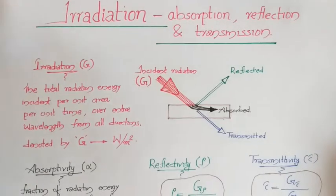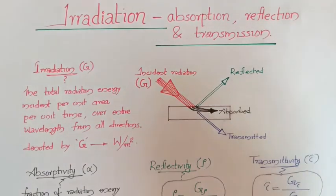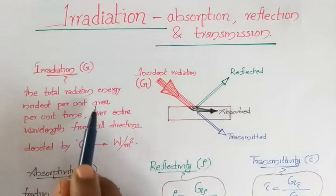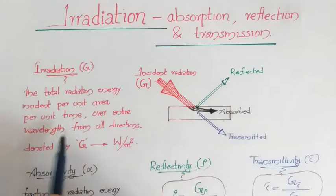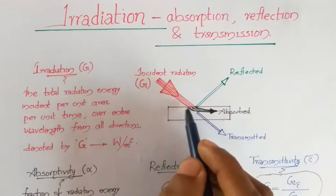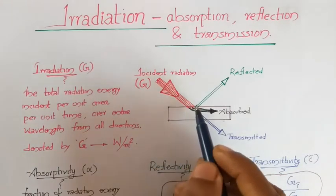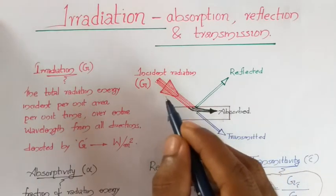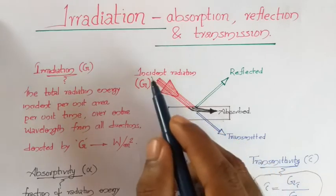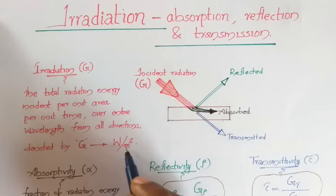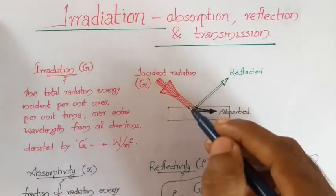Welcome back. In this video we will be discussing irradiation. Irradiation means the total radiation energy incident per unit area per unit time over the entire wavelength from all directions. If you are taking a surface, the total energy coming towards or incident on this surface, covering the entire wavelength and coming from all directions, is called irradiation, named as capital G, and its unit is watts per meter square.